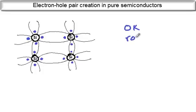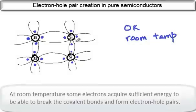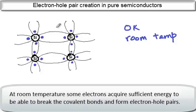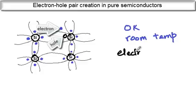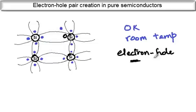However, at room temperature electrons acquire some thermal energy. And if this energy is sufficient to break the covalent bond, then the electron can move out and what you have is a vacancy or a hole created in its place. There is a missing electron, and this missing electron is called a hole. So now we have electron-hole pairs which are created in the material — this is the electron and this is the hole — and these are the charge carriers.